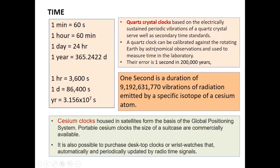Previously, quartz crystal clocks based on the electrically sustained periodic vibrations of the quartz crystal were used, and they were the first standards, then became secondary standards. Quartz clocks can be calibrated with the rotation of Earth, and their error is one second in approximately two lakh years. Although this error is very small, such clocks cannot be used for very high precision experimentation, therefore they switched to cesium clocks.